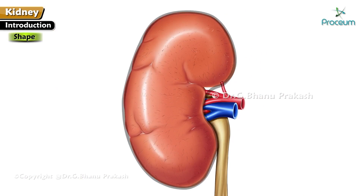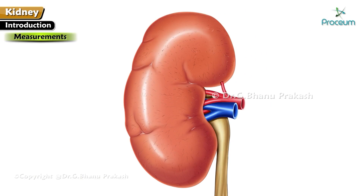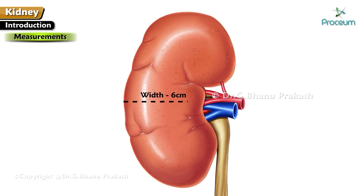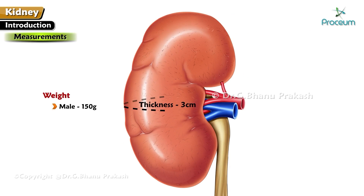The shape is bean-shaped. Measurements: length is 11 cm, width is 6 cm, thickness 3 cm, and weight is 150 g in males and 135 g in females.